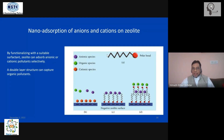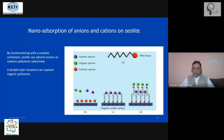The functionalization of zeolite — to make it attractive to either anions or cations — can be done very easily because it has either a positive or negative charge on its surface. We can choose a proper surfactant, adsorb it onto the zeolite, and change the polarity to make it suitable for our requirement.